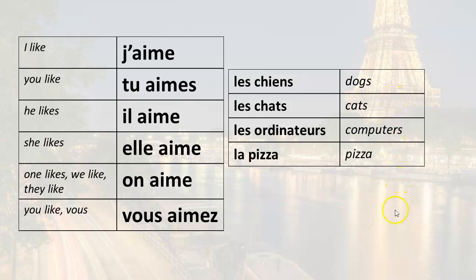Let's see how many ideas we can express. I like dogs: j'aime les chiens. I like cats: j'aime les chats. I like computers: j'aime les ordinateurs. I like pizza: j'aime la pizza. Notice the pronunciation: la pizza.